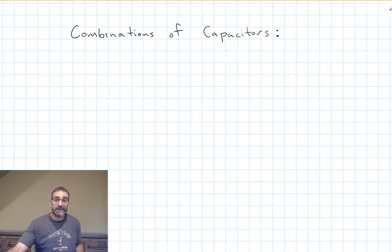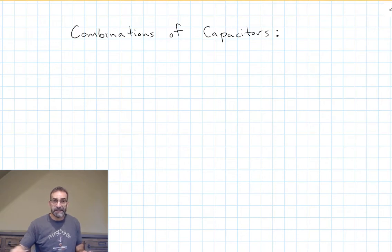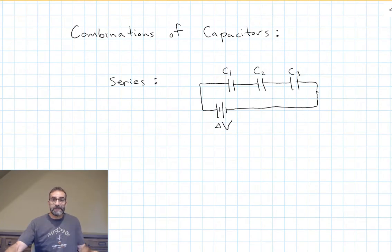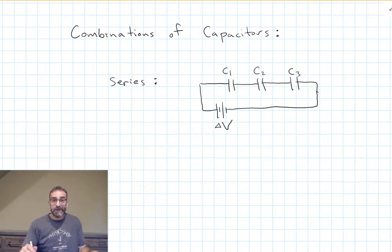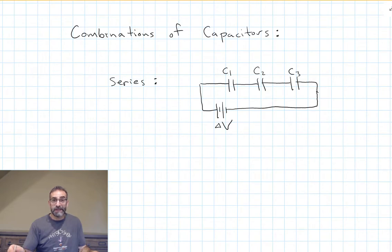Quite often in our circuits we have more than one capacitor, so it's important to understand how to deal with combinations of capacitors. Two common ways to hook up electrical devices are series and parallel. Capacitors in series would look something like this — you can see these three capacitors C1, C2, and C3 are all hooked up in a line together. An analogy I like is that circuits are like hiking trails. If you were on this hiking trail, you wouldn't have any choice: if you went through the first capacitor, you'd have to go through the second one and then the third one. There's no fork in the road where you can take a different path and bypass one of them.